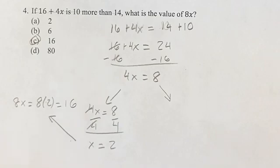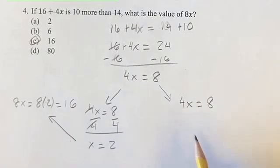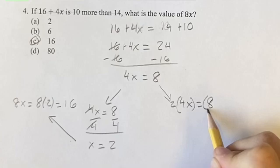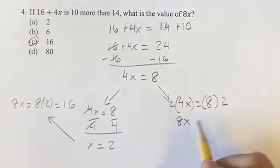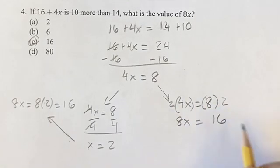Or just to save a little bit of time, again, starting with 4x equals 8, if you multiply both sides by 2, you get 2 times 4 is 8x is equal to 8 times 2 is 16.